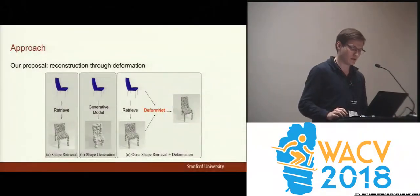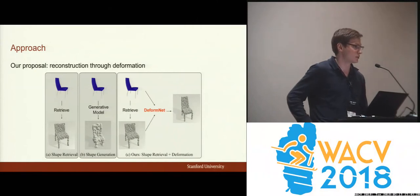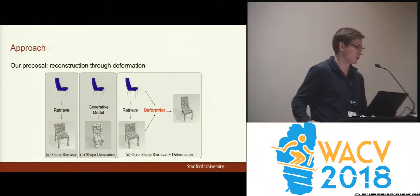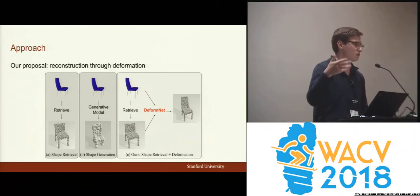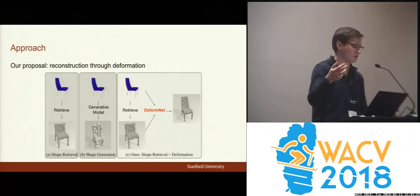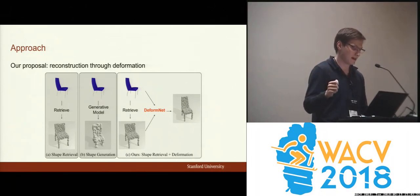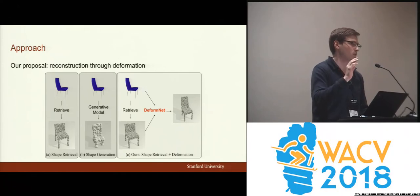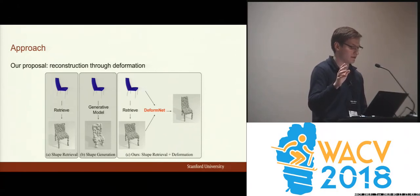Here we have three different ways you can approach reconstruction. One way is to do no actual reconstruction, but to have a set of known shapes and then just retrieve the most similar known shape using the image — that's retrieval, on the left. That's of course very limited because you need far too many known shapes to find one that is similar enough to your image.